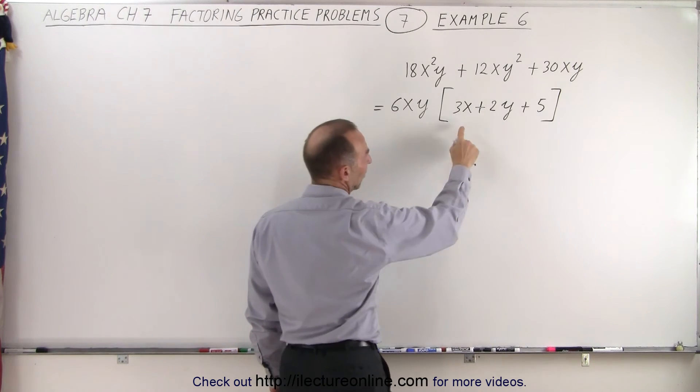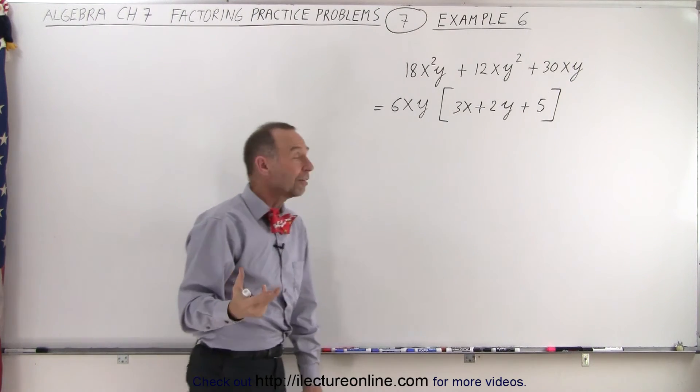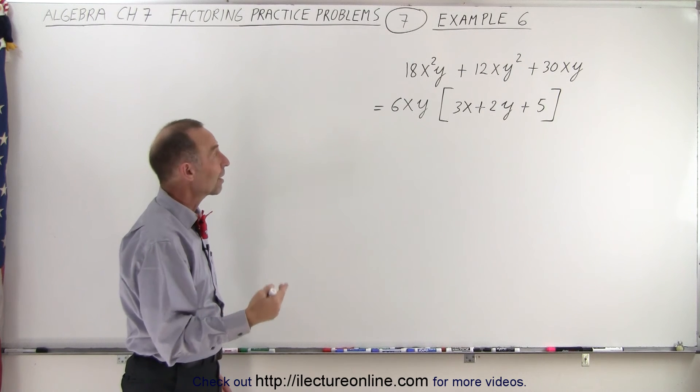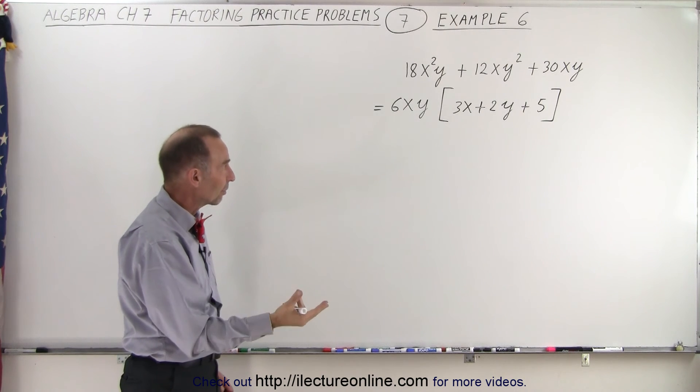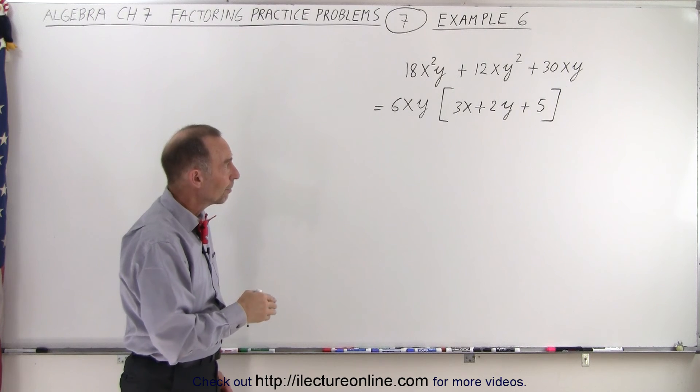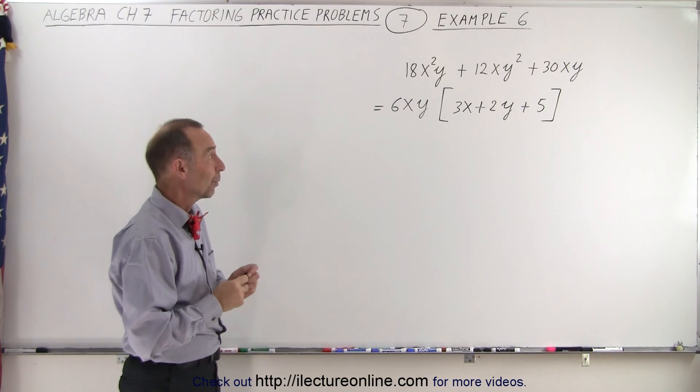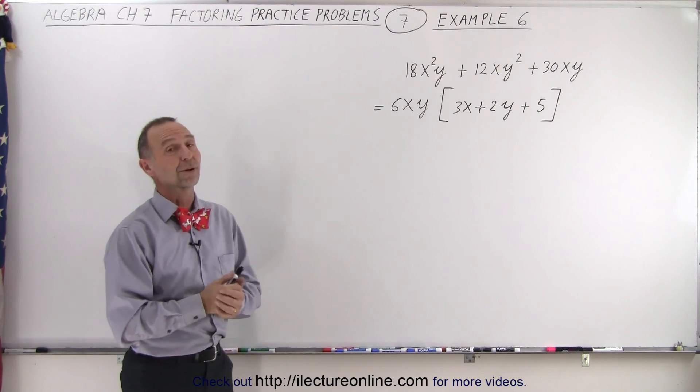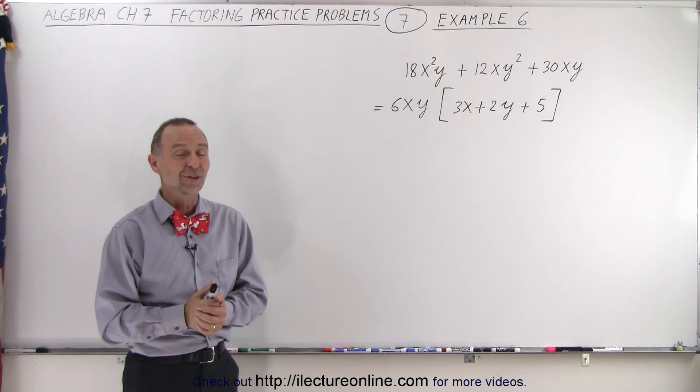And notice what we have left here. We do have a trinomial left, but it is not factorable. That is the last step. We cannot factor it anymore. We can factor out a common 6xy, but that's it. We cannot factor what is remaining. That's the factored result of our original problem. And that's how it's done.